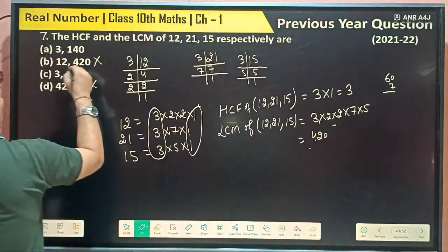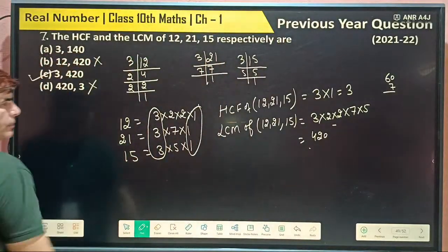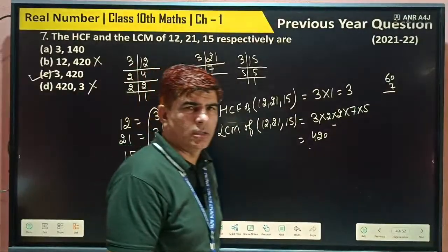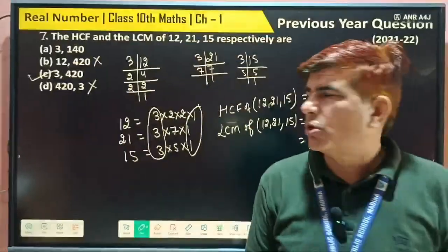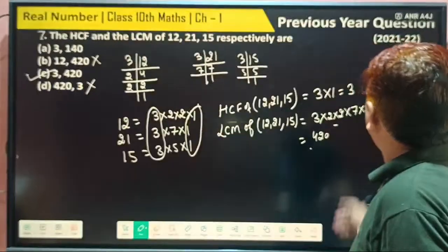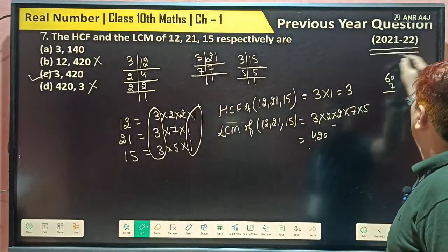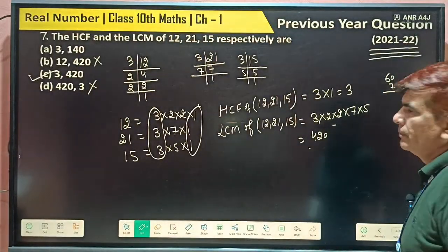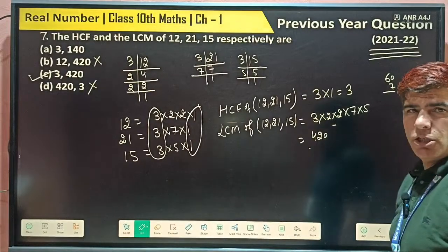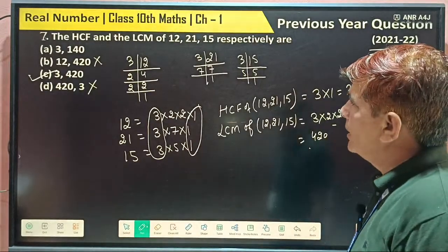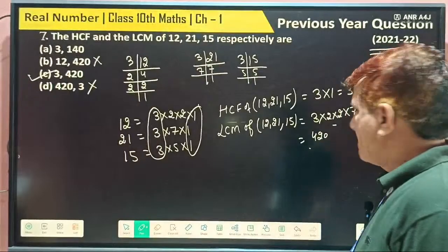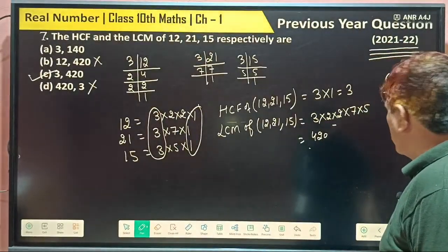So this is your answer. Which one is your answer? This one. So this possibility came in the year 2021. Understood how you can find out HCF and LCM of more than two numbers?